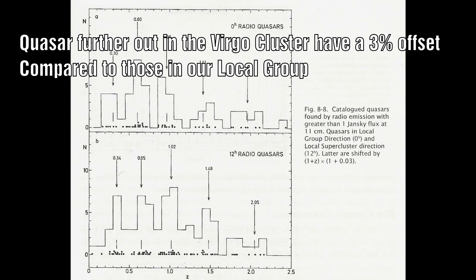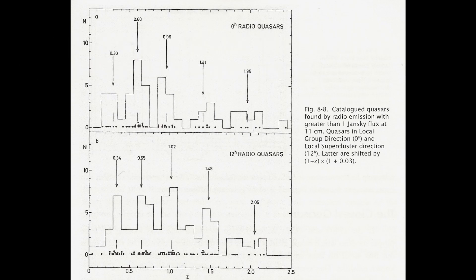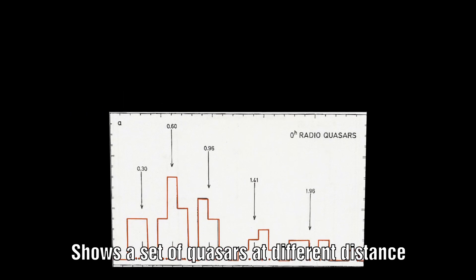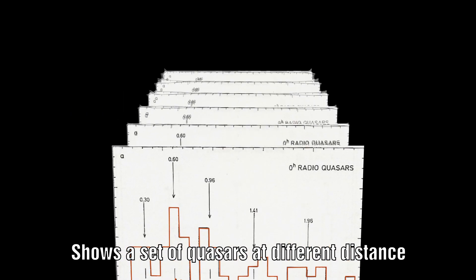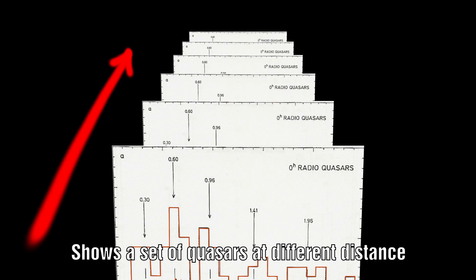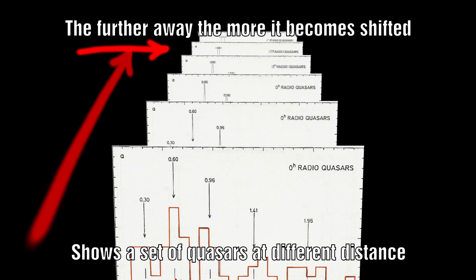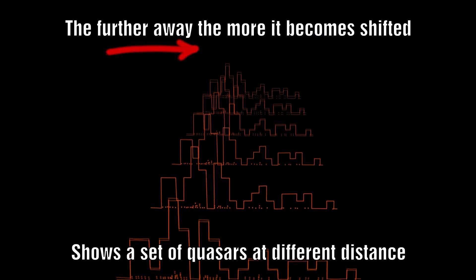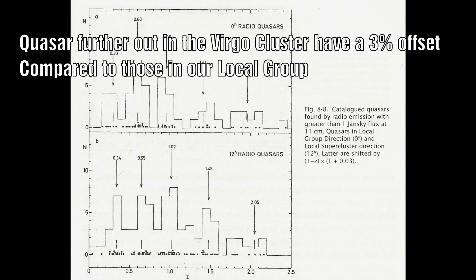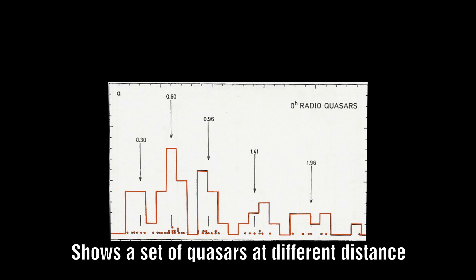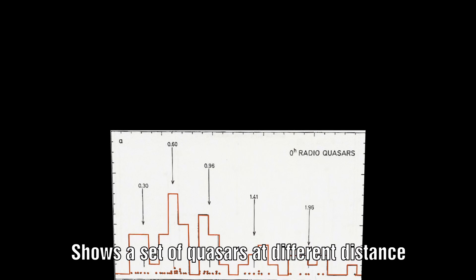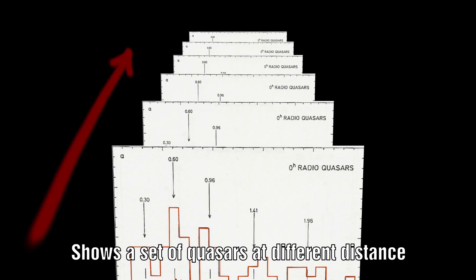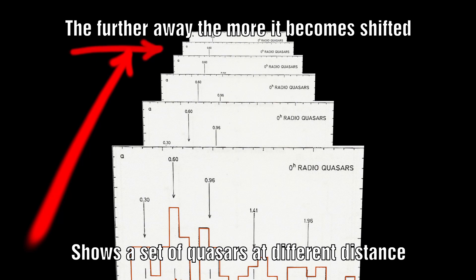He showed that not only was redshift quantized, but also that there was an obvious shift as you moved from our local group out towards the Virgo cluster. He speculated that as you moved further outwards, there would be clear and distinct jumps in the starting point of the redshifts that we see. They would still all be quantized, but the starting points would be different. Is this what we are seeing here? Is this a galaxy that sits in a part of the universe that is much further away from our local group?